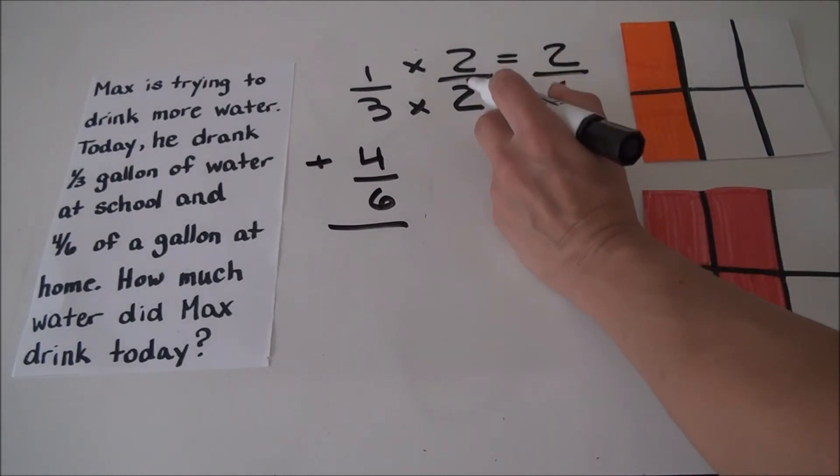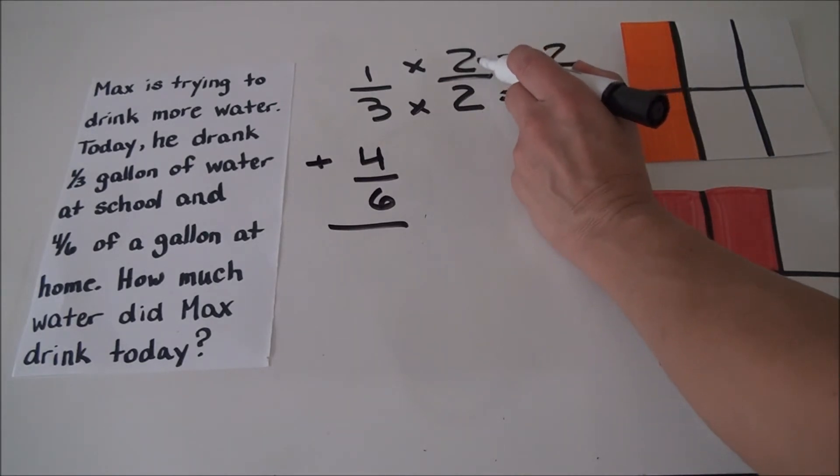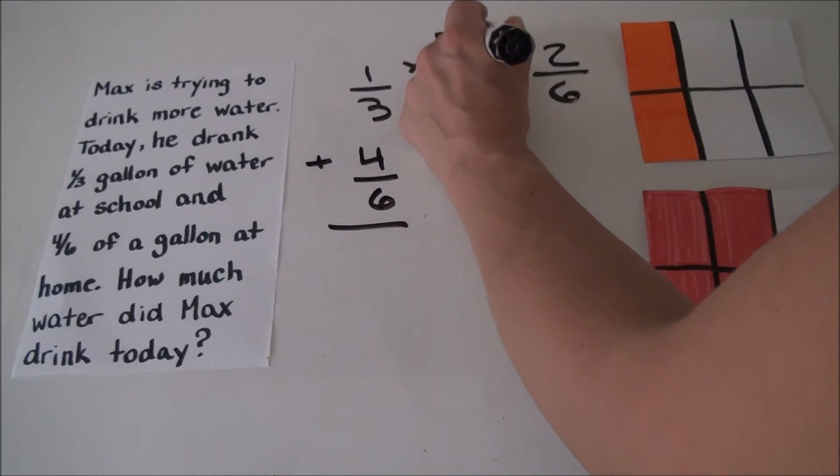Look, we ended up multiplying by two-halves. In third and fourth grade, we learned that any time a fraction has the same numerator and denominator, this fraction is equal to one.